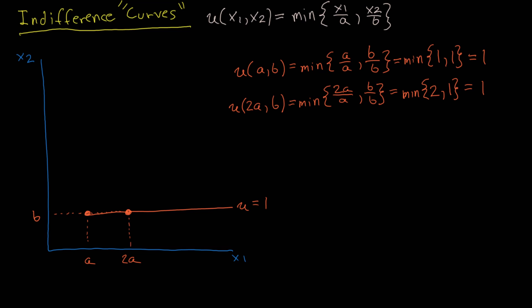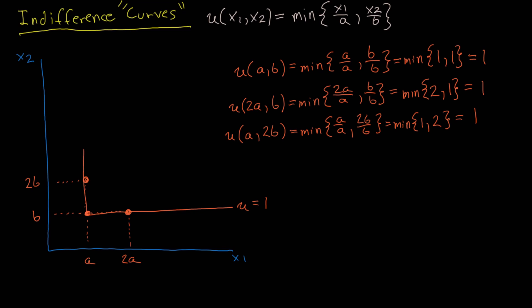We're not finished tracing out the indifference curve. Now let's consider the case where we double the quantity of good 2, giving the bundle (a, 2b). Evaluating the utility function: the minimum of a over a and 2b over b simplifies to the minimum between 1 and 2, which is 1. So doubling the quantity of good 2 while keeping good 1 at a yields the same utility. As we continue to increase good 2 while keeping good 1 held constant at a, we trace out a vertical segment, because this consumer likes to consume these goods in fixed proportions at a ratio of a to b.